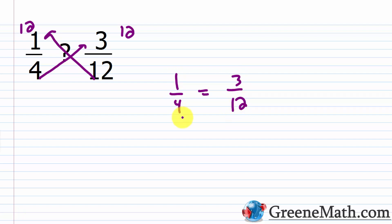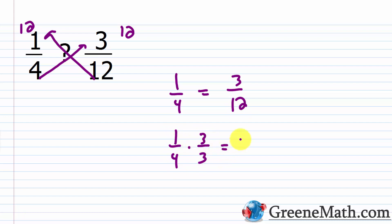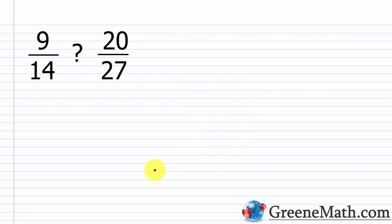You can also see that they're equal because if I multiply 1 by 3 I get 3, and if I multiply 4 by 3 I get 12. Essentially, all I did was take 1/4 and multiply it by 3/3, which is the complicated form of 1, and I got 3/12. So of course 1/4 and 3/12 are equal.